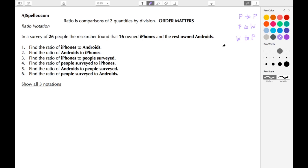We're going to also talk about the three different notations. The notations that ratios are put in are with a colon, so we have a colon b, using the word to, a to b, and then as a fraction a over b.